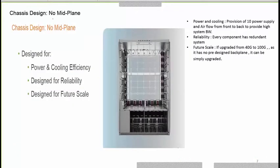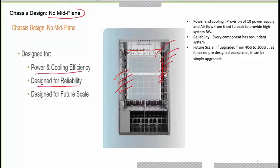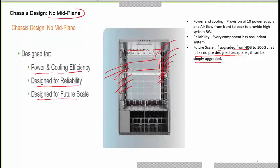The Nexus 9500 does not have a mid-plane. From the front you insert the line cards; from the back you connect the fabric modules. The mid-plane design is optimized for power and cooling efficiency, reliability, and future scalability. For example, if you want to replace a 40 gig line card with a 100 gig line card, you can do so easily — it adjusts in the back end. There is no pre-designed backplane; the chassis is simply empty and visible from front to back.